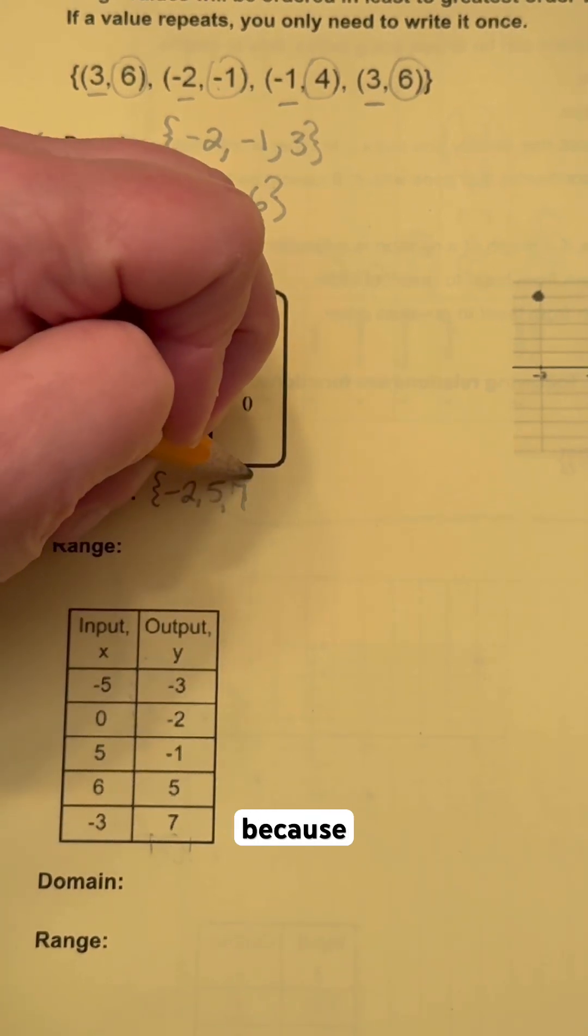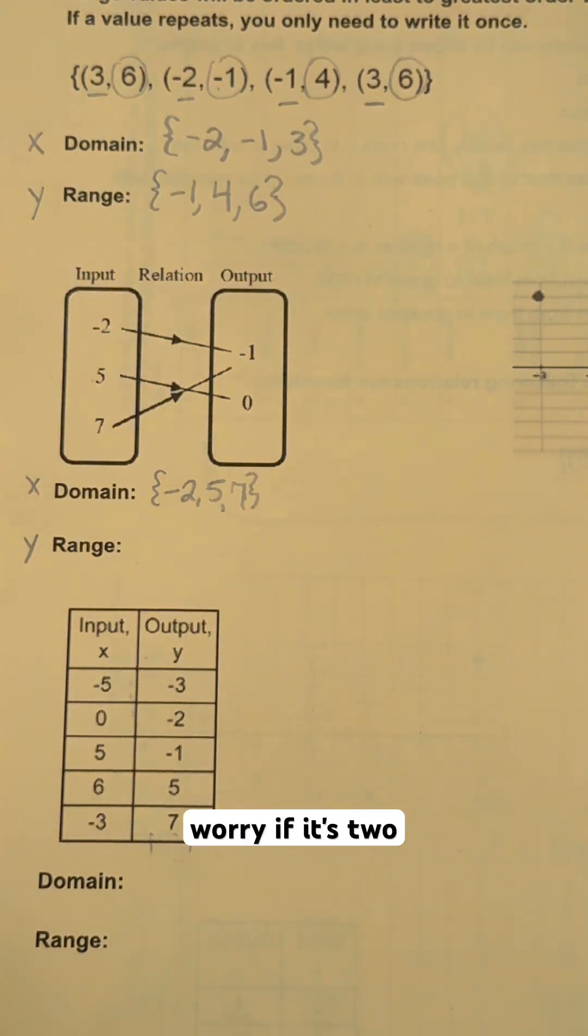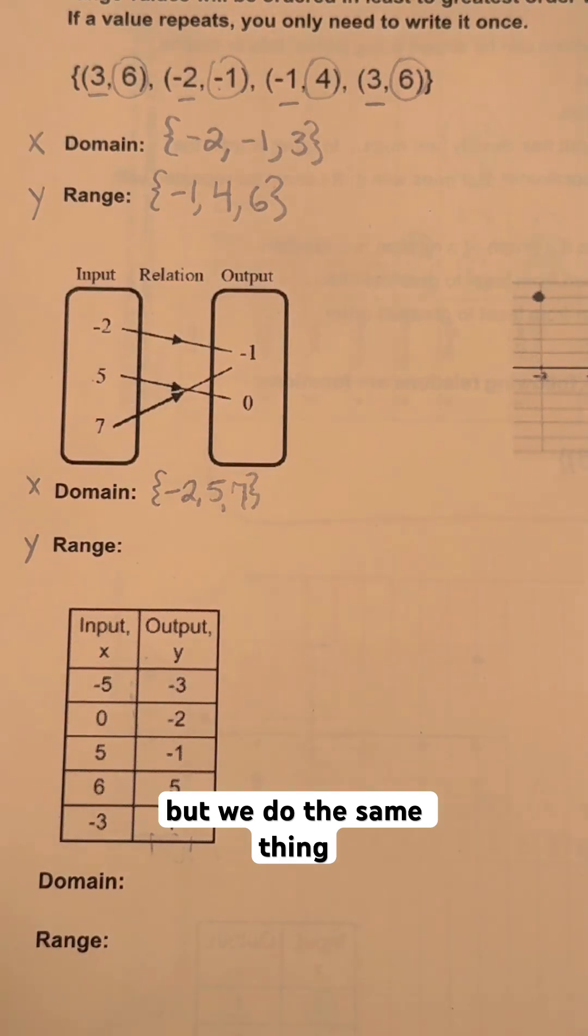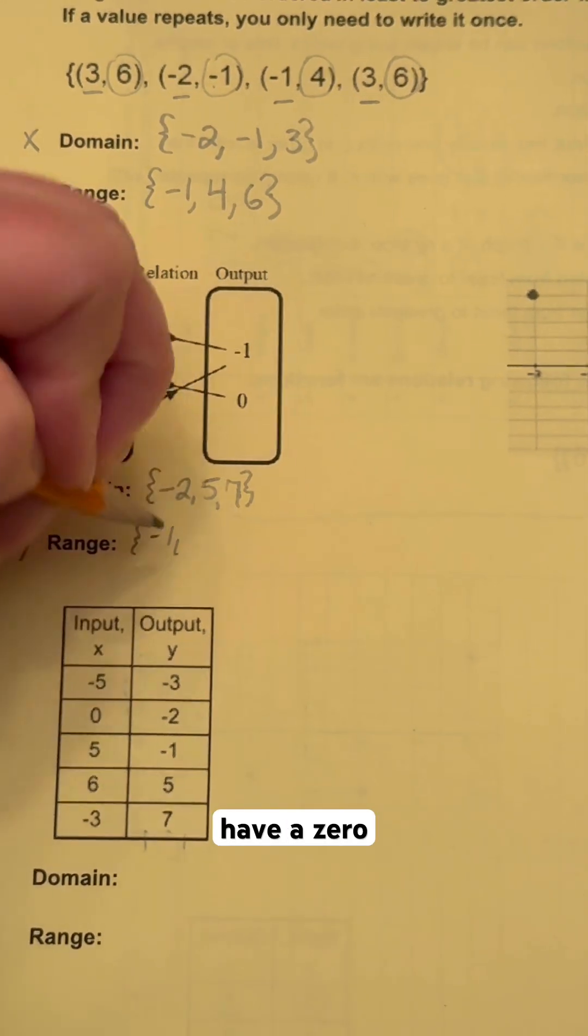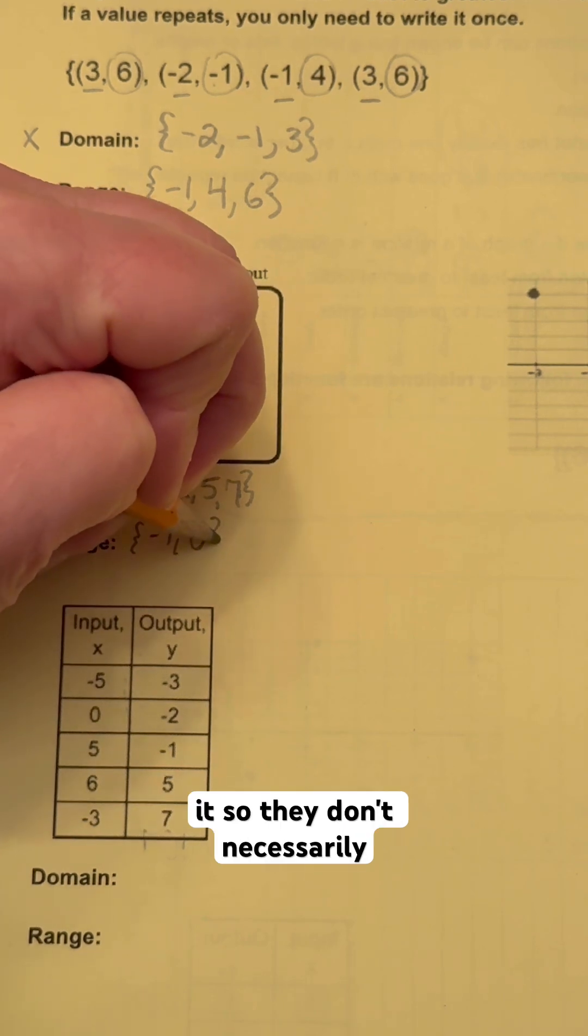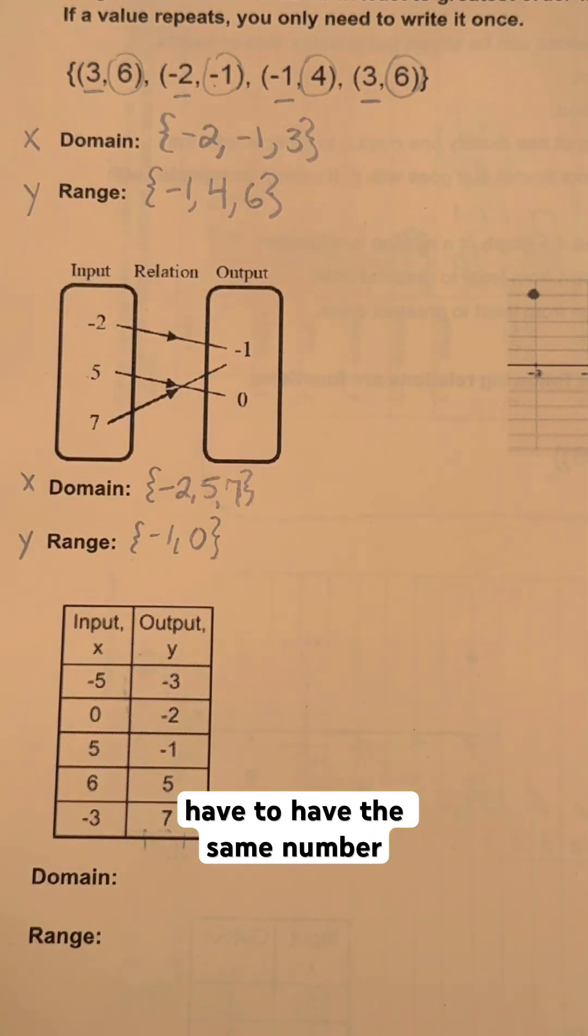And then because there's only two, don't worry if it's two, but we do the same thing with our range. So we have a negative one, we have a zero, and that's it. So they don't necessarily have to have the same number, and that's it.